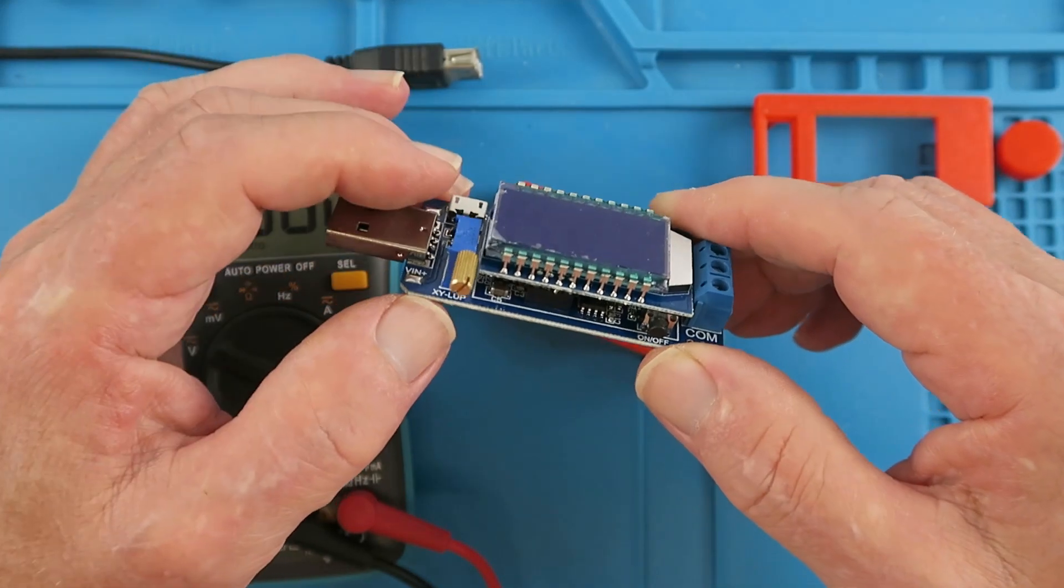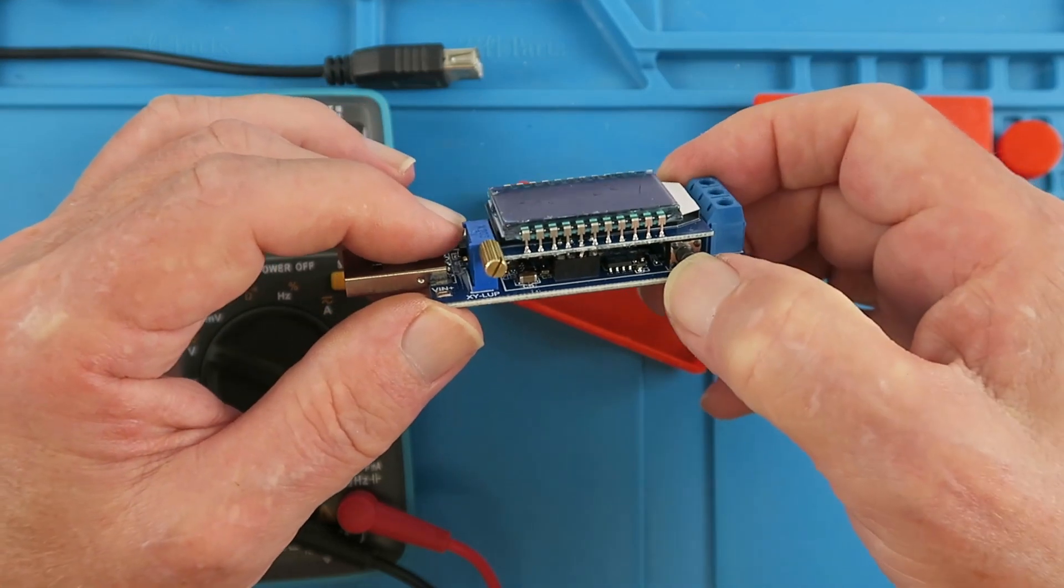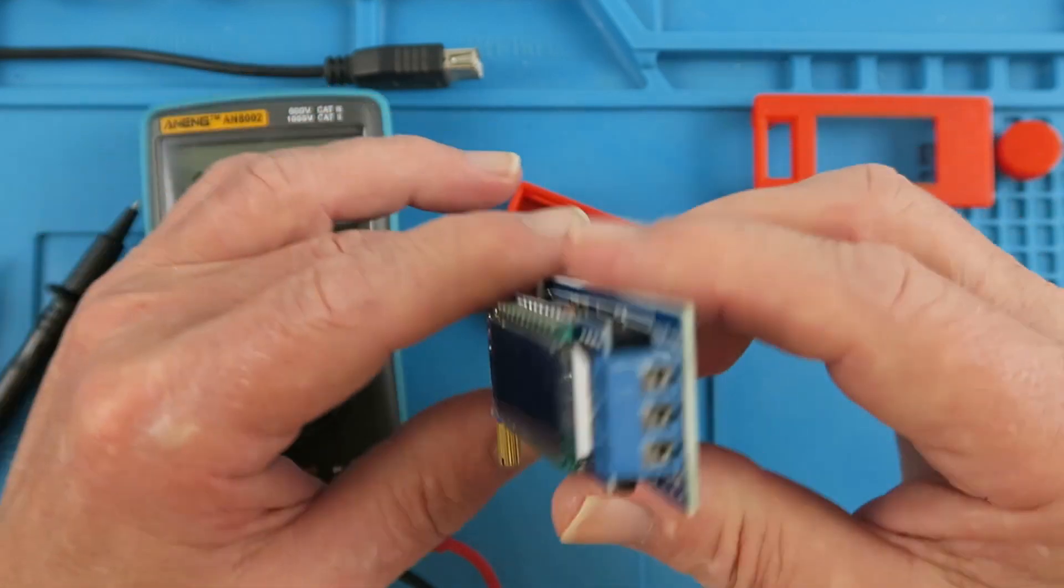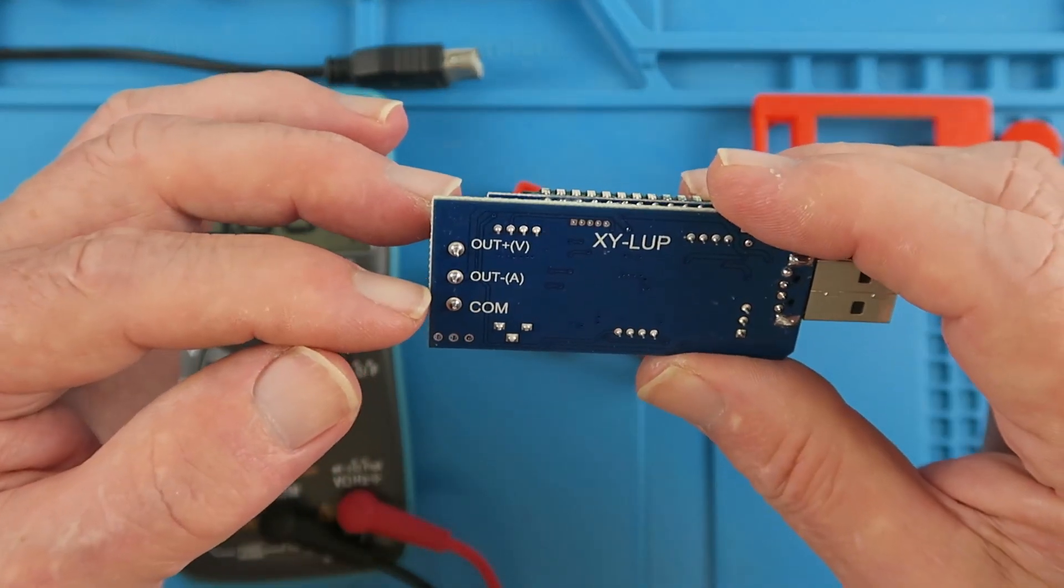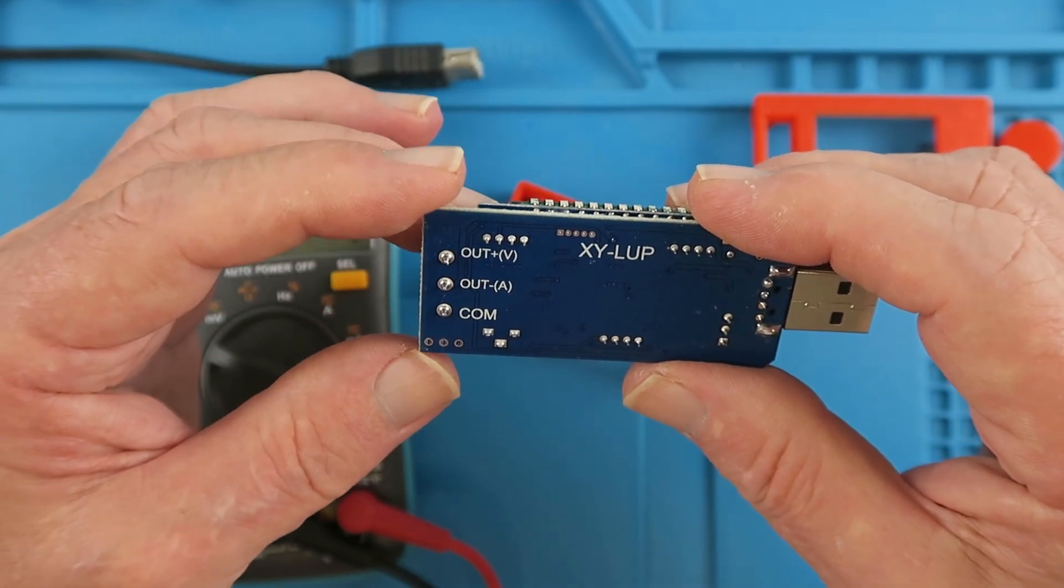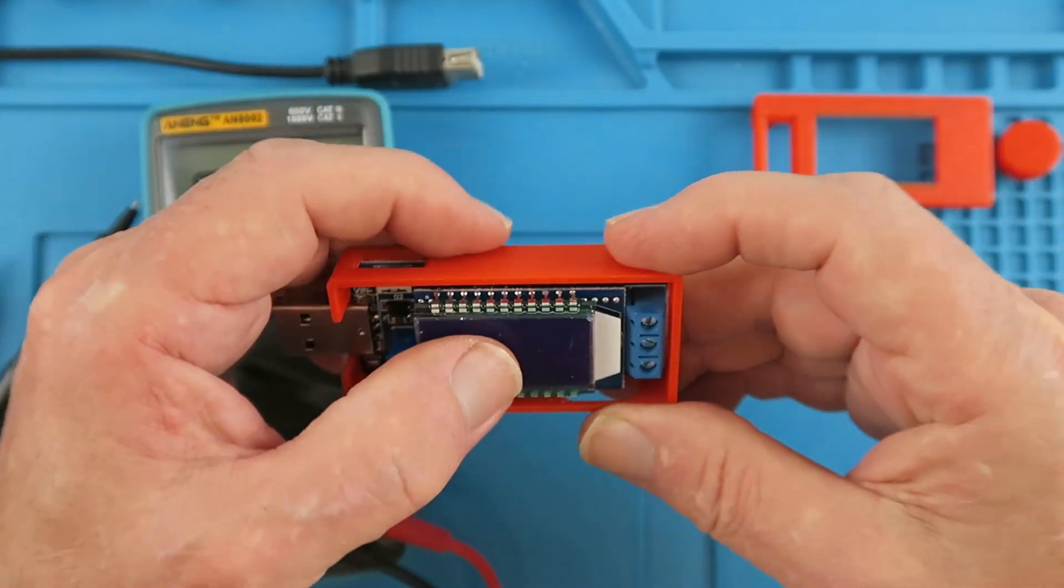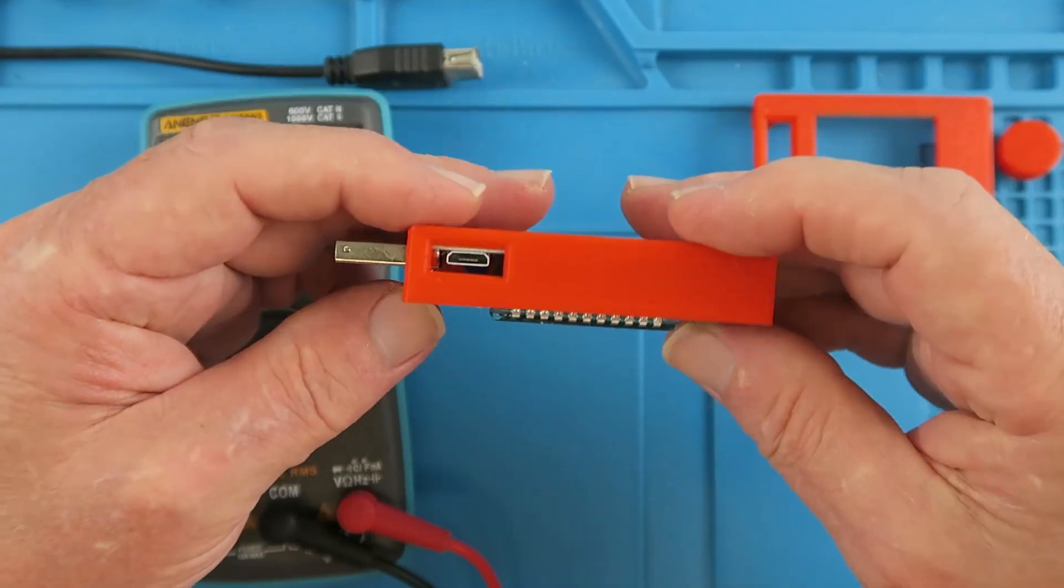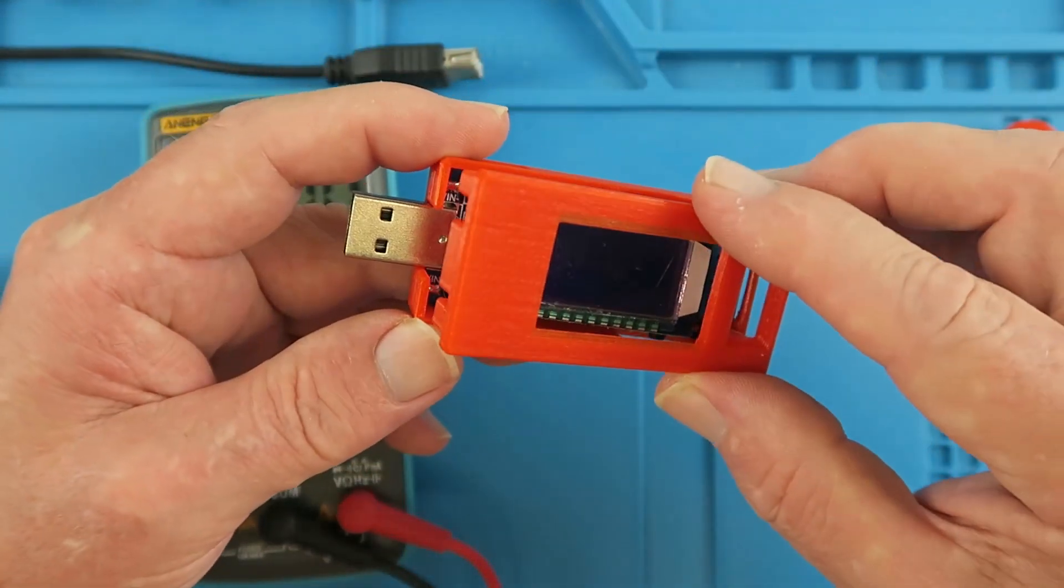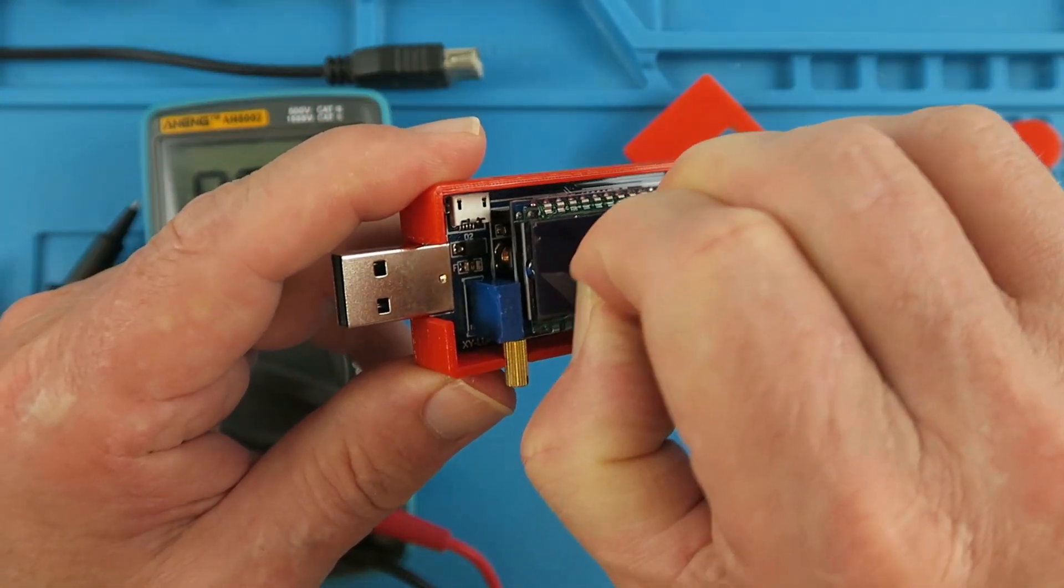Just before we put it into the case, I pointed out that we've got the USB connectors there. Clearly we have the little potentiometer to adjust the output voltage. We've got a little on-off and function switch here and the output terminals. We have a common and output minus and output plus. That fits quite neatly in there, access to all the important parts. There's a protective film on the screen, we'll just remove that.